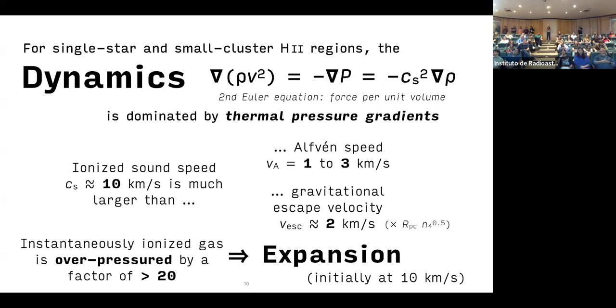Now I'm going to talk about the dynamics of H2 regions. In the case of single star, small cluster H2 regions, we think this is dominated by thermal pressure gradients. The sound speed is about 10 kilometers a second. That is larger than the typical Alfven speeds, and it's larger than typical gravitational escape velocities.